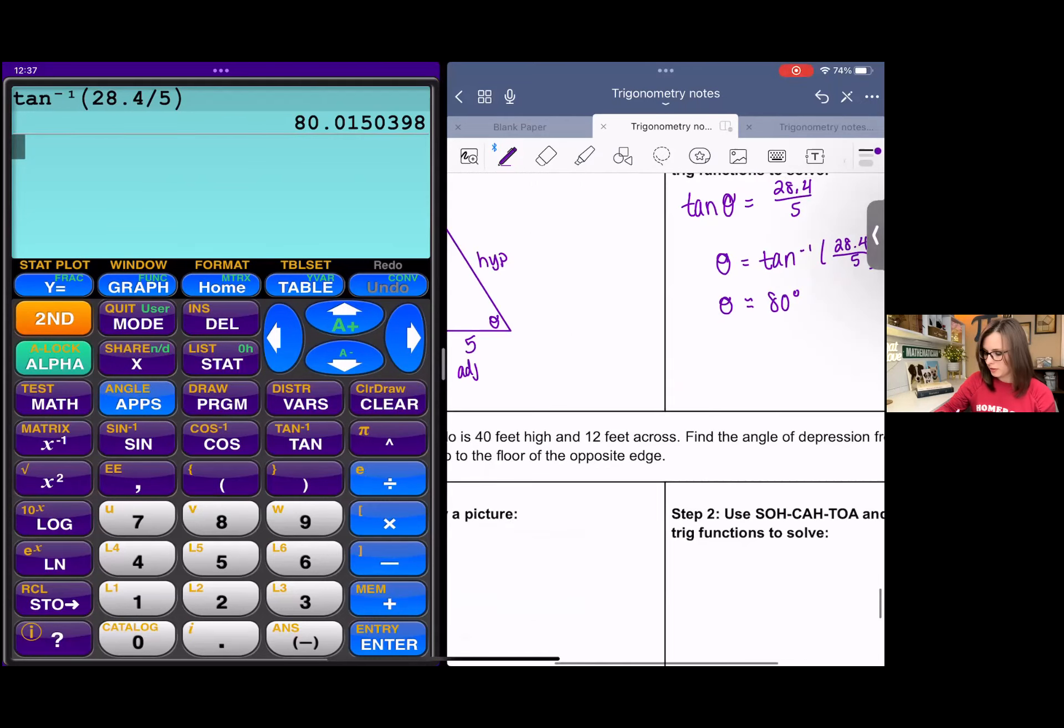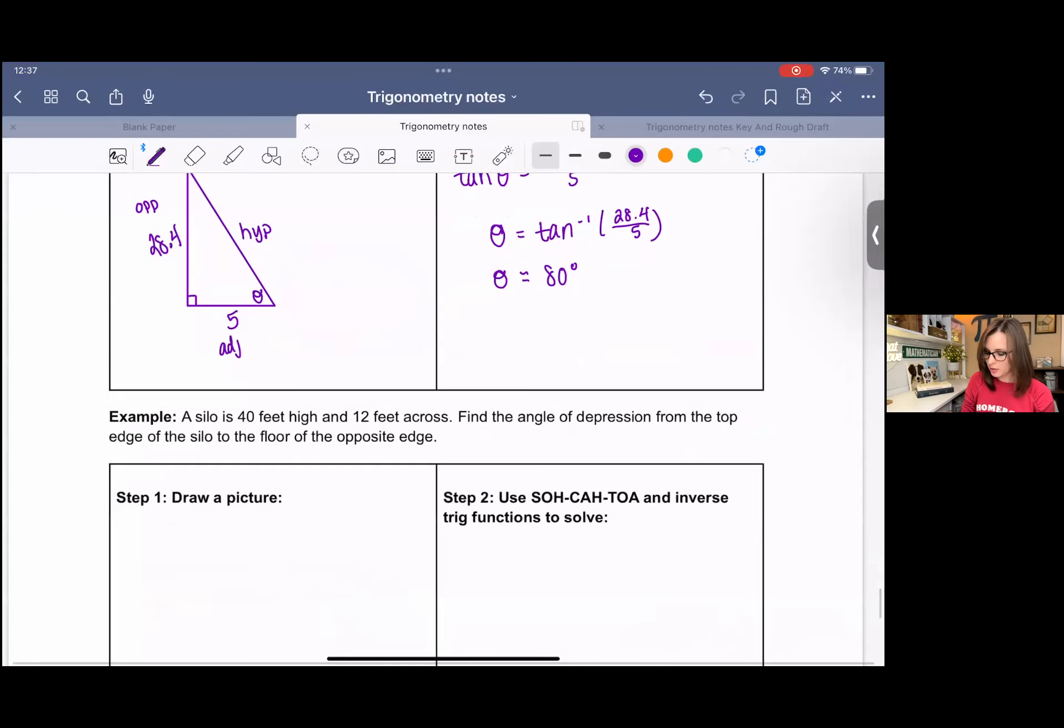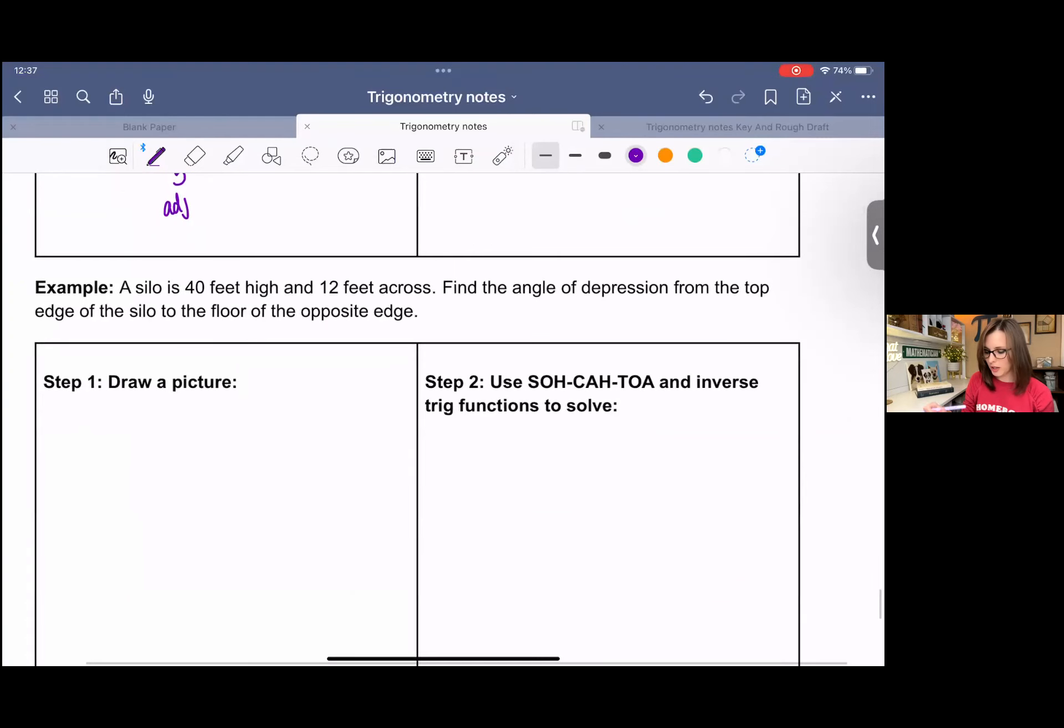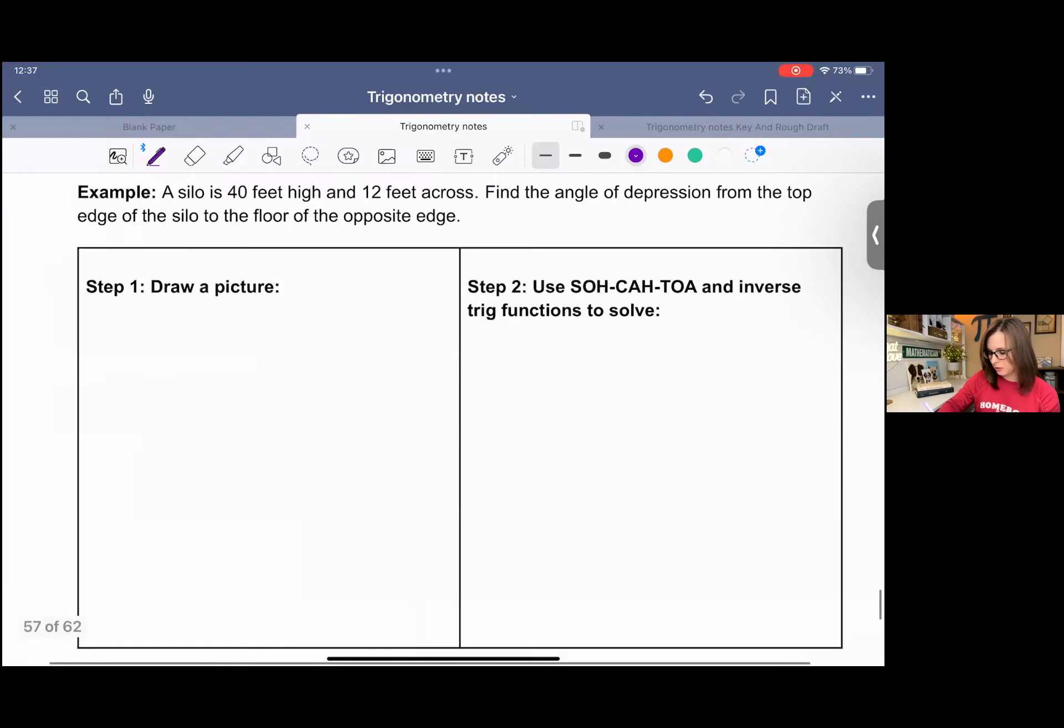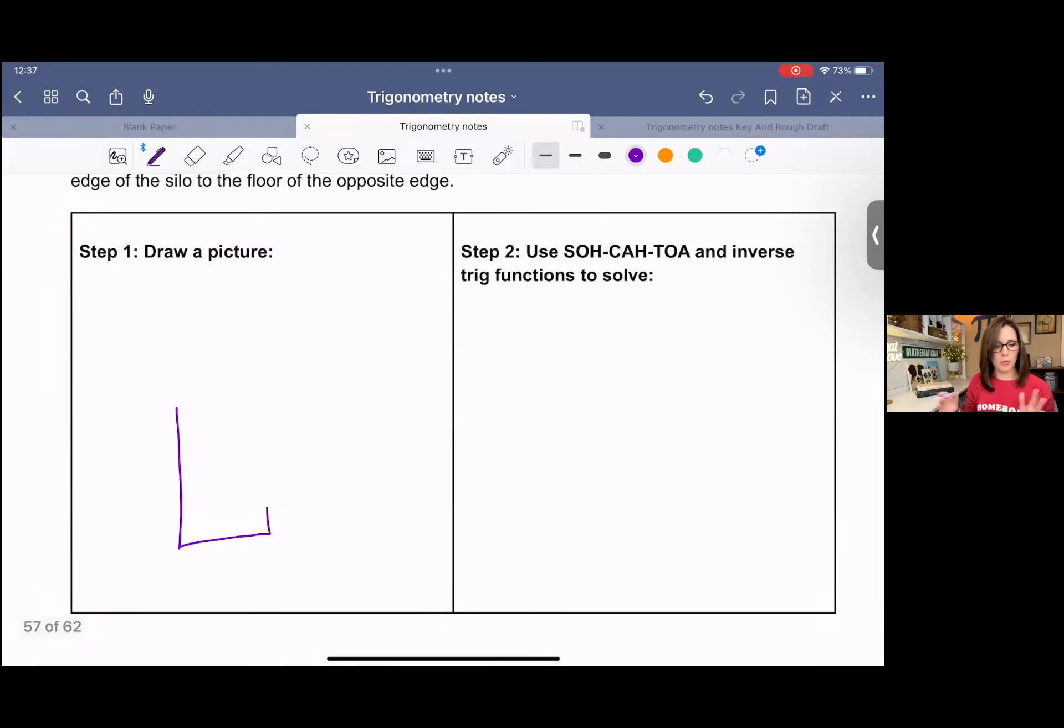For the next one, a silo is 40 feet high and 12 feet across. Find the angle of depression from the top edge of the silo to the floor of the opposite side. So it's a lot of words, but trust me, if you just draw the picture and label each piece, then it's going to become clear to you what needs to happen. So a silo is kind of this rectangular thing with a dome top.